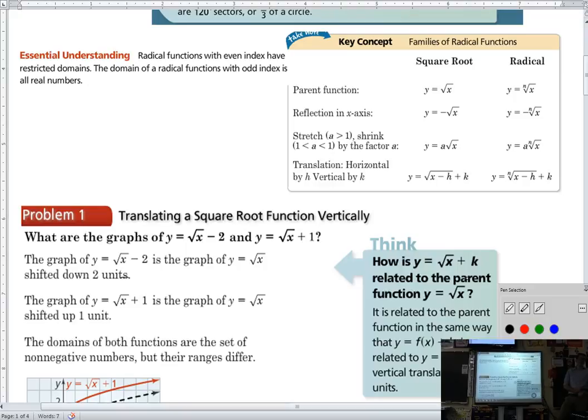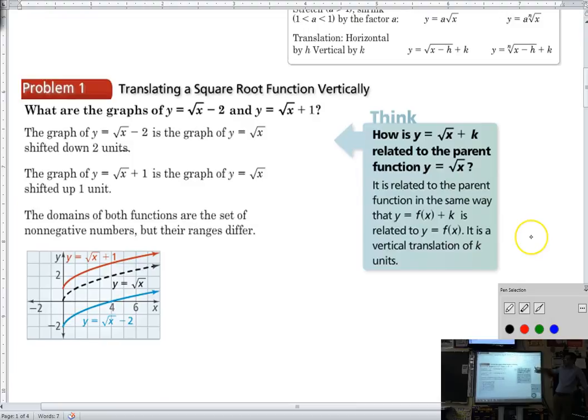So I have my any root function, just my radical functions to the nth root, and I have my square root function just under the square root. When I want to reflect it, all I do is take the opposite of it or the negative. When I want to stretch it or change that steepness, we apply a coefficient in front of the radical. And when I want to shift it horizontally or vertically, I either shift under the radical for a horizontal or outside the radical for a vertical.